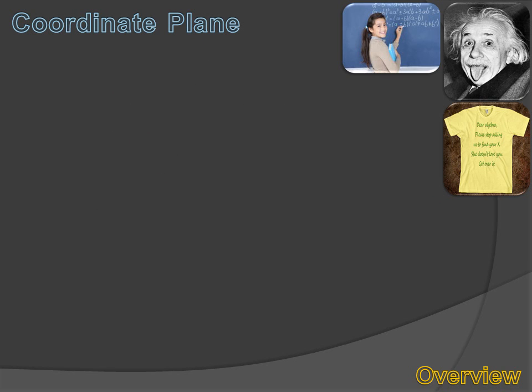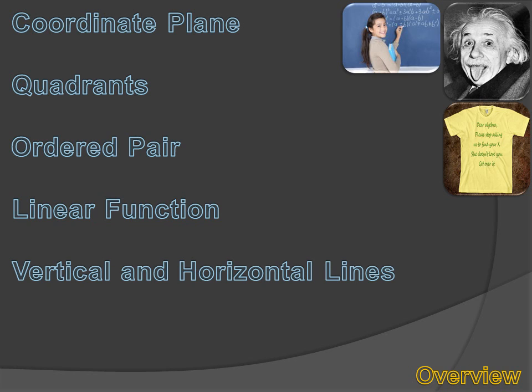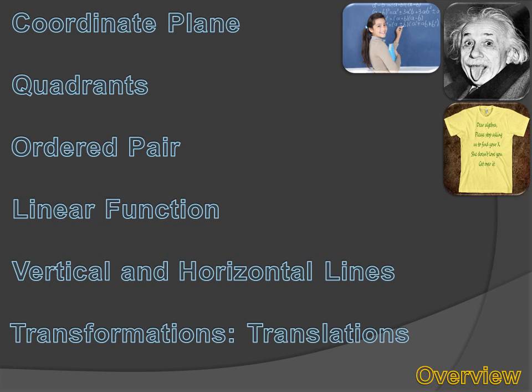And we're going to talk about the coordinate plane, quadrants, ordered pairs, linear functions, vertical and horizontal lines, and a type of transformation, translations.